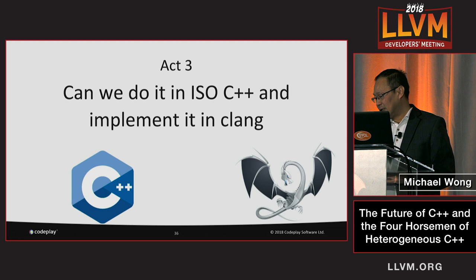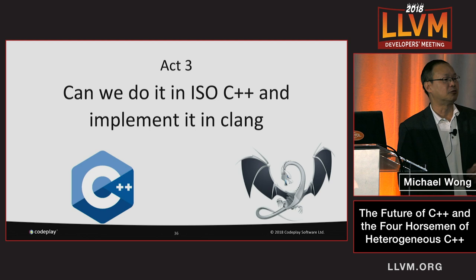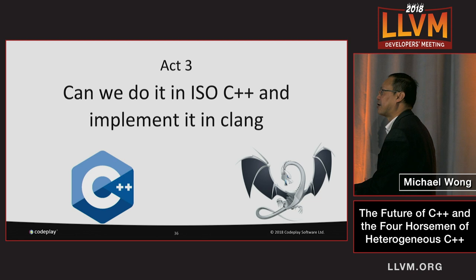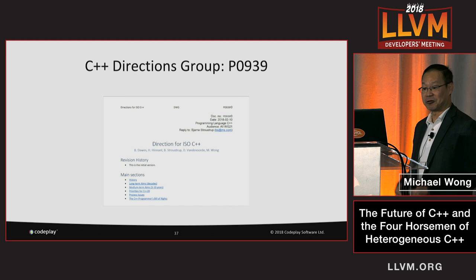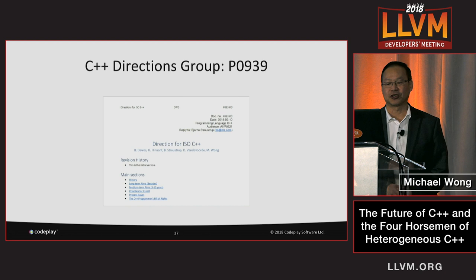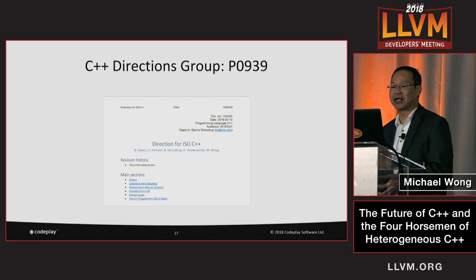Let's move to Act 3. How can we do it in ISO C++? I've talked about motivation and challenges. Can we do it in ISO C++ and in Clang? In February of this year, we created something called the C++ Directions Group, and it issued a directions document. Most interestingly, that document indicates a future that covers heterogeneous computing. That's great news.